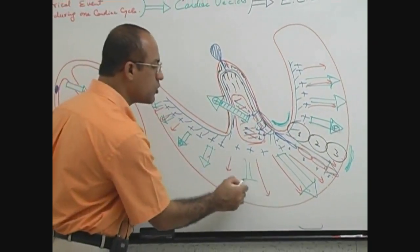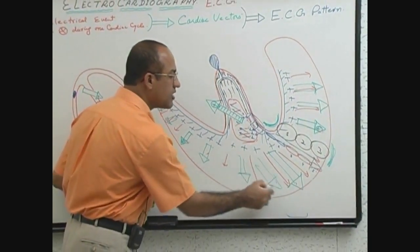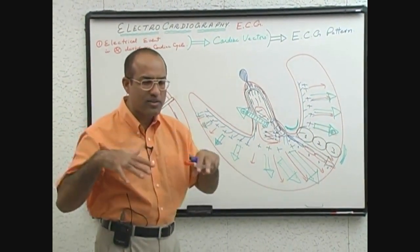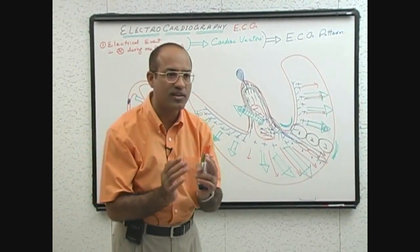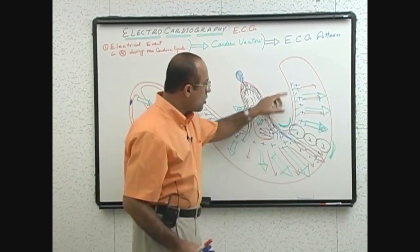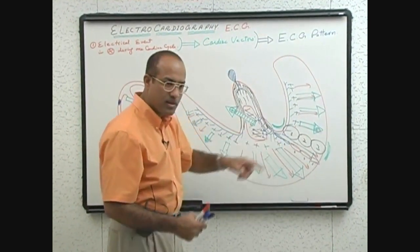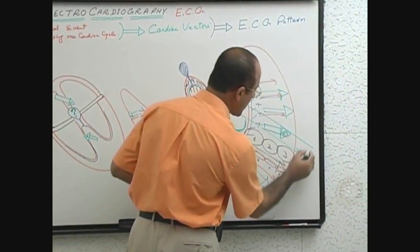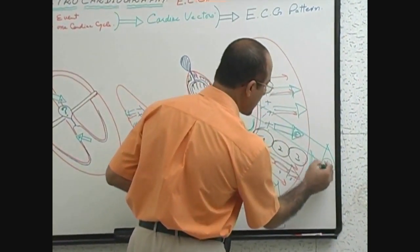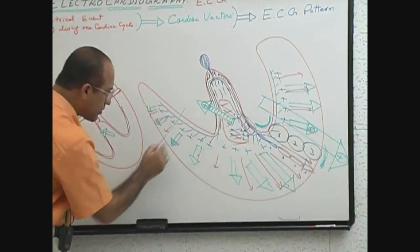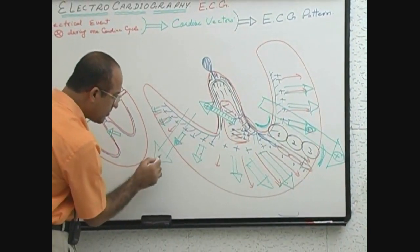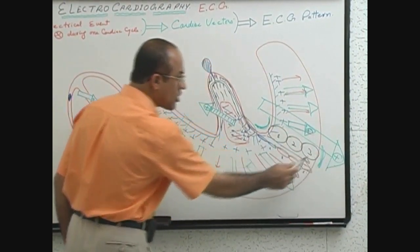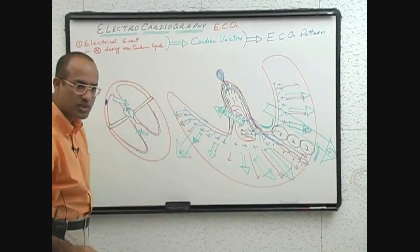All these vectors are produced almost simultaneously. When multiple vectors are produced simultaneously, they can be added together. So when the left ventricle is undergoing depolarization, we can make a single vector representing left ventricular depolarization. And this vector represents right ventricular depolarization. The left ventricular vector is stronger and the right ventricular vector is weaker.